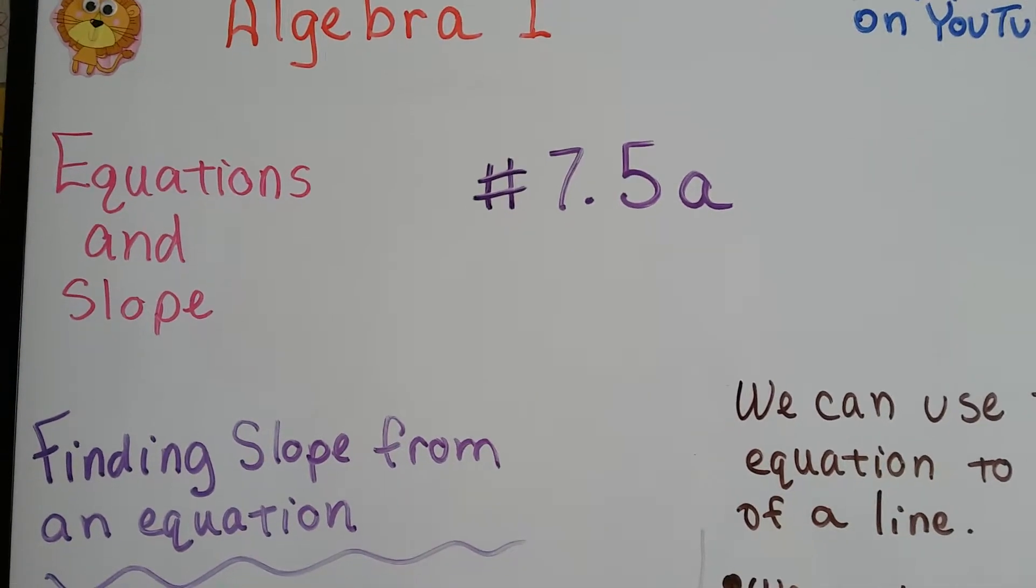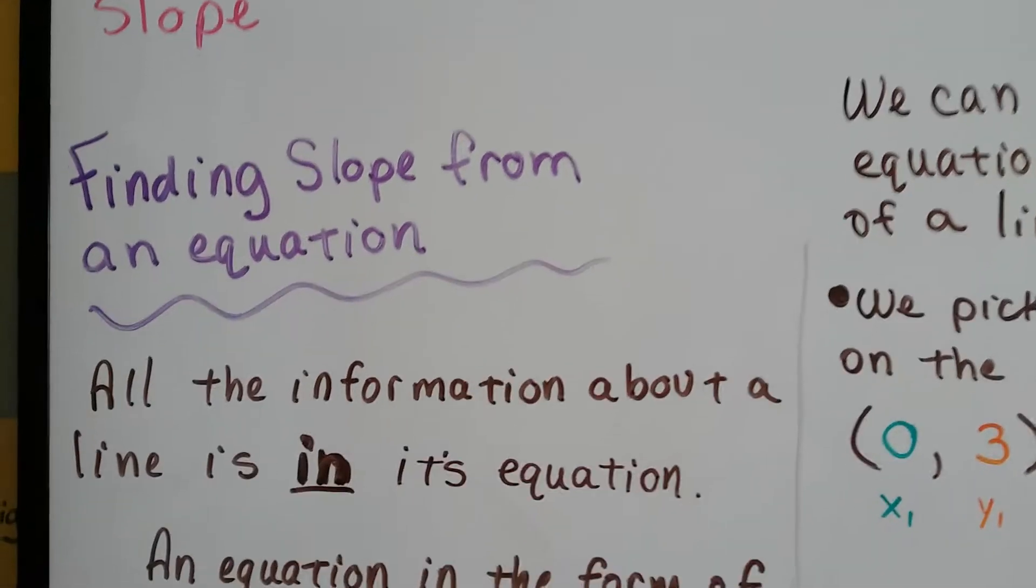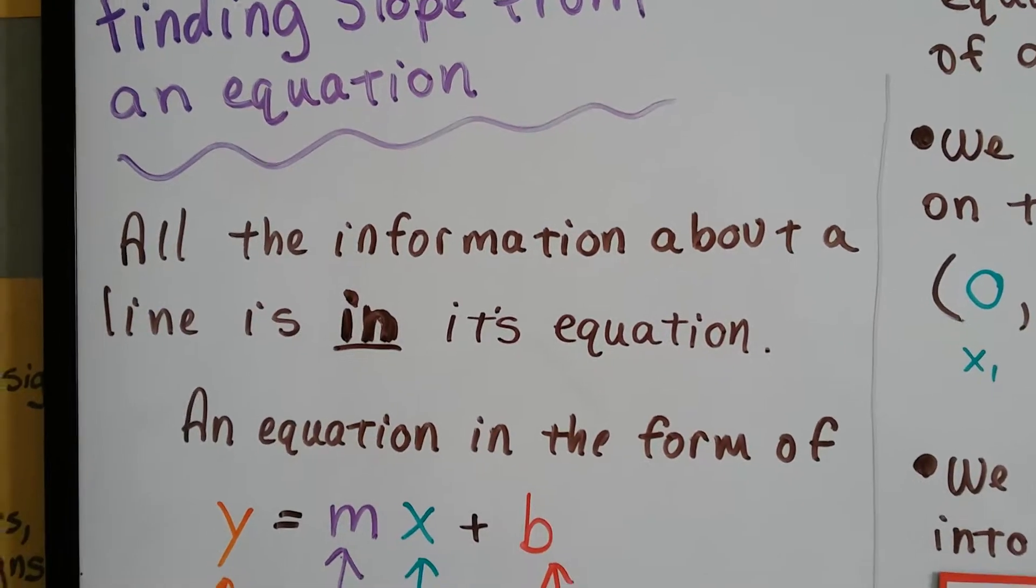Finding slope from an equation, 7.5a. All the information about a line is in its equation.